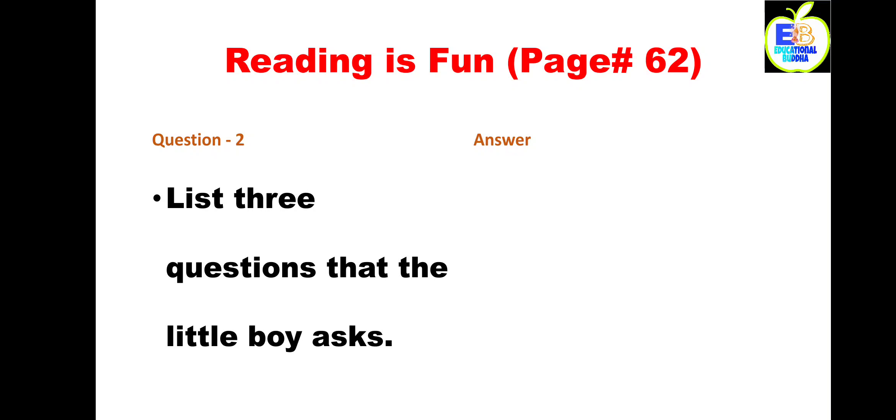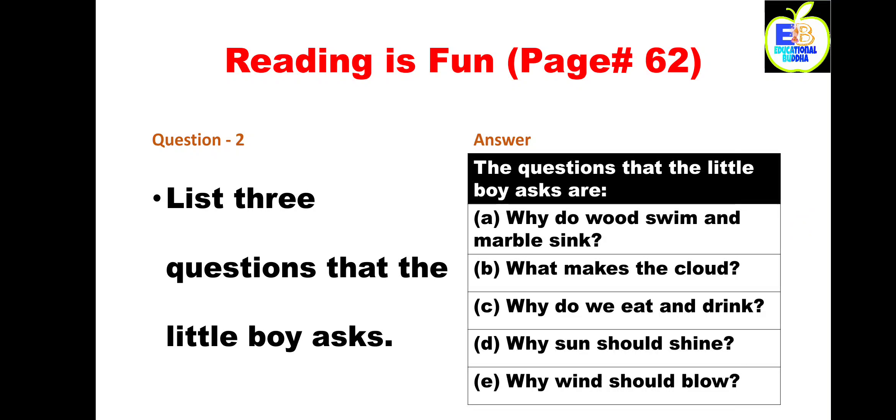Our next question is: list three questions that the little boy asked in the poem. The curious little boy asked so many questions. Here you can see some of his questions. The questions that the little boy asks are: A) why do wood swim and marble sink, B) what makes the clouds, C) why do we eat and drink, D) why sun should shine, E) why wind should blow.